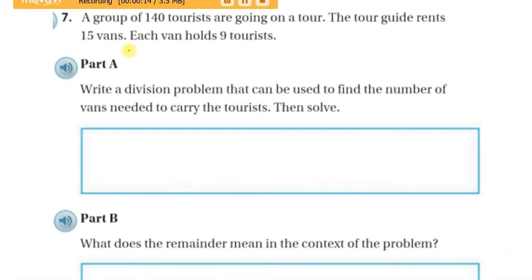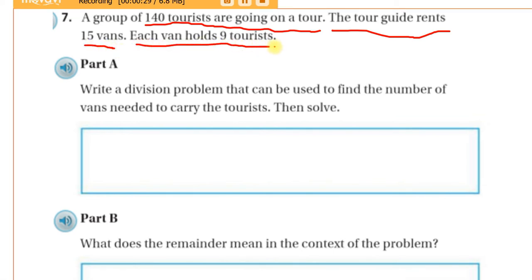Again, I'm on page 194 in the big math book. Alright, number 7. A group of 140 tourists are going on a tour. The tour guide rents 15 vans. Each van holds 9 tourists. So before I even do any math, I'm already thinking, okay, I'm dealing with people and vans, so that tells me how I'm going to interpret the remainder.